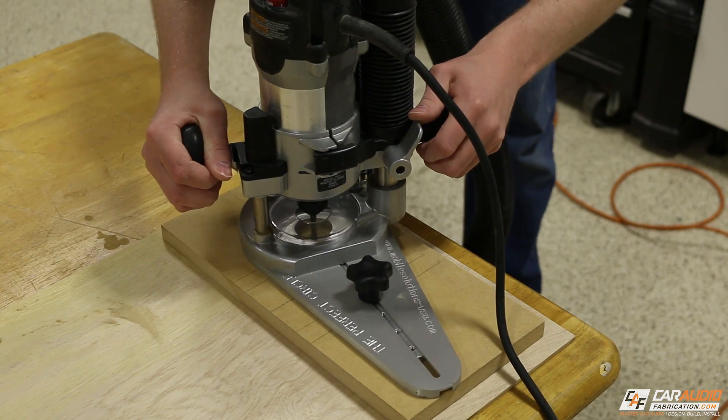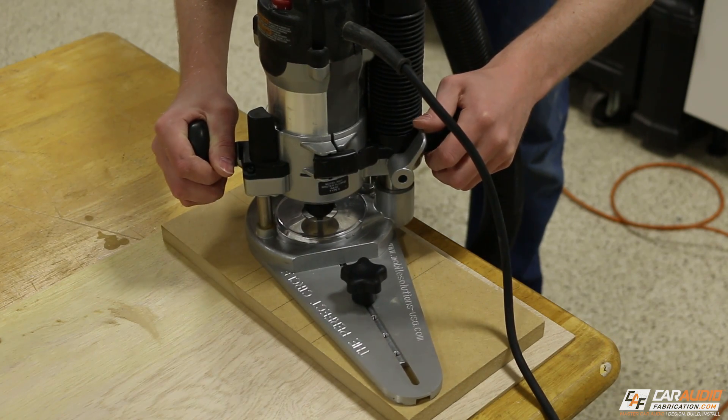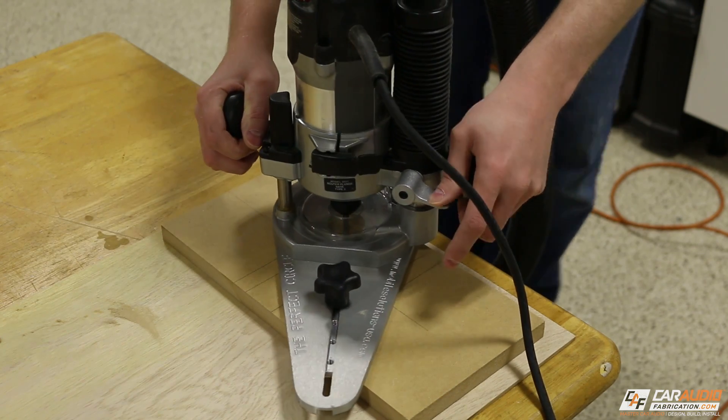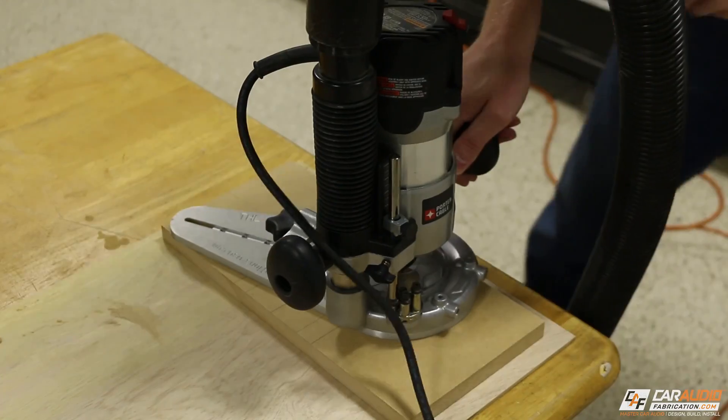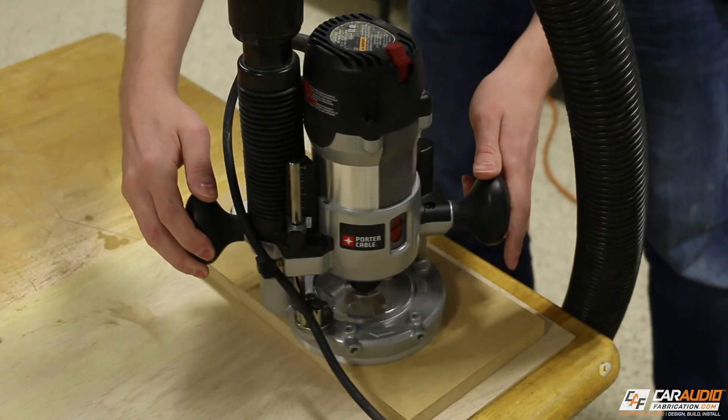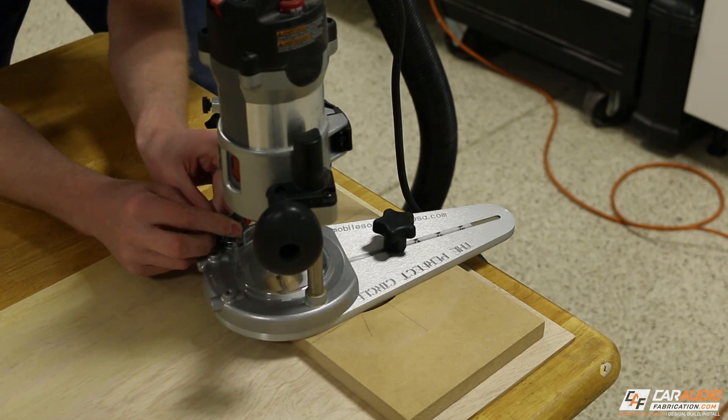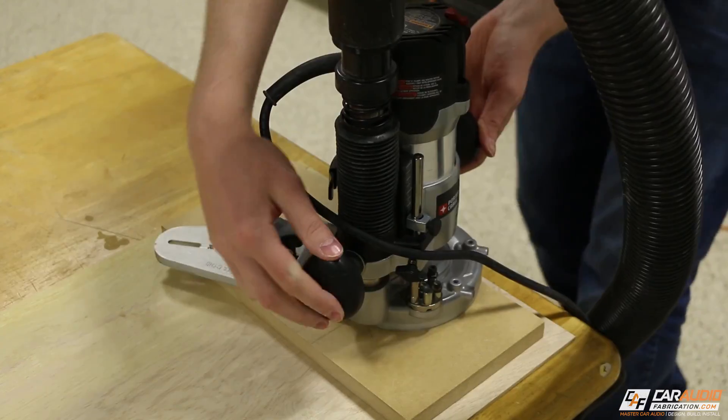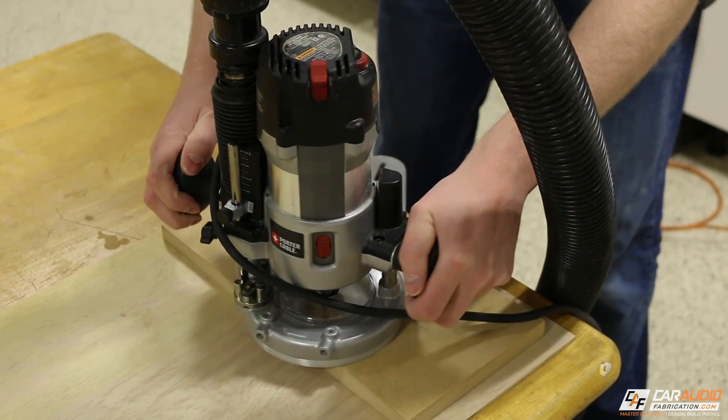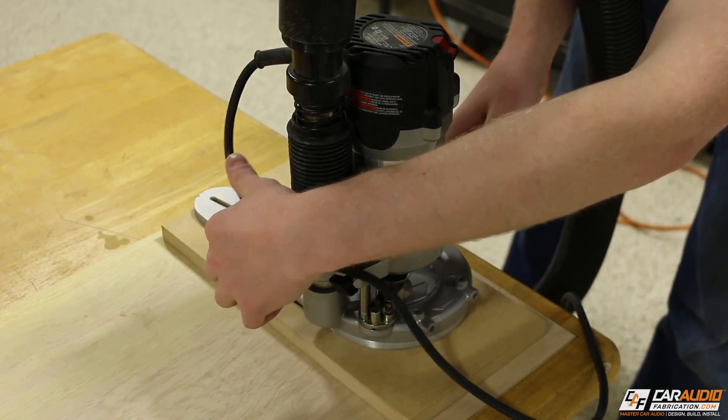So what I'm going to do here is I'm going to turn on the router. I will then plunge down into the wood, and I've set my depth adjustment on the plunge router so I only go about halfway into the thickness of the wood, making my first pass. Once I've made that first pass, I can then once again adjust the depth, and this time I'm going to go through the full thickness, and I can make the second pass, completing the final cut.